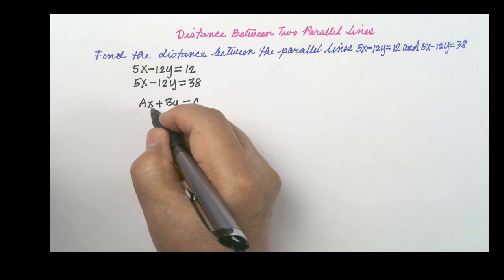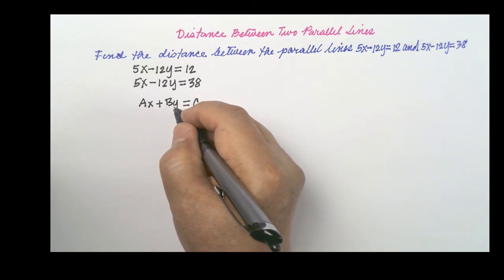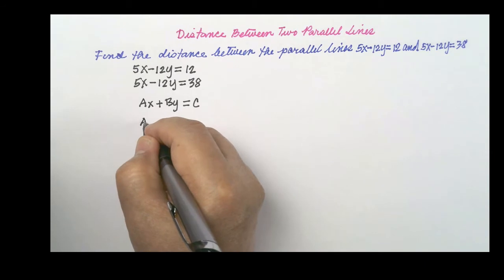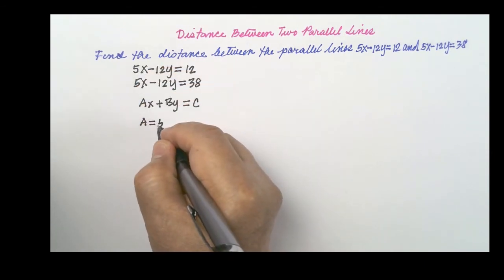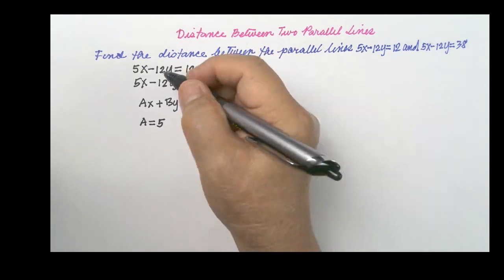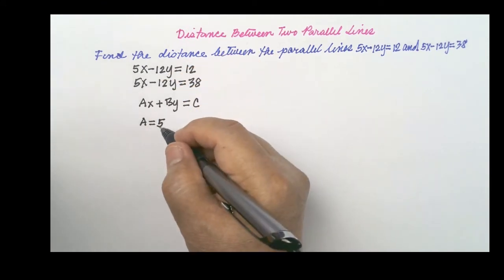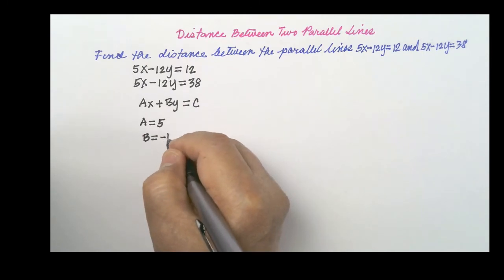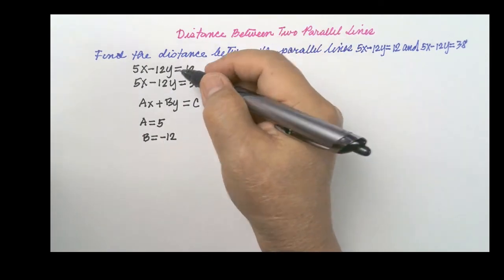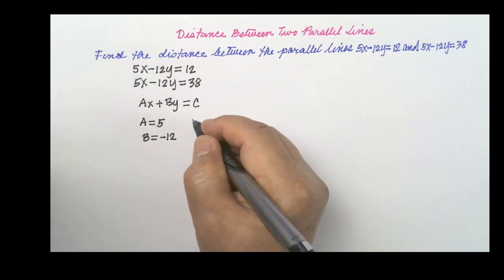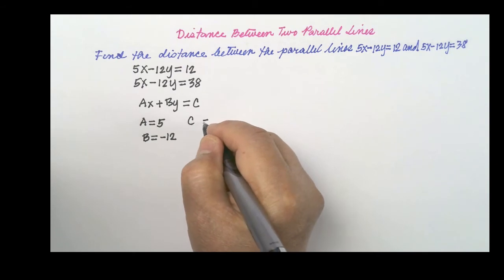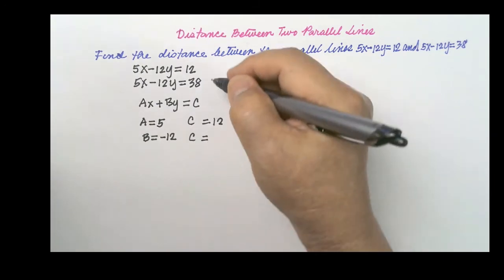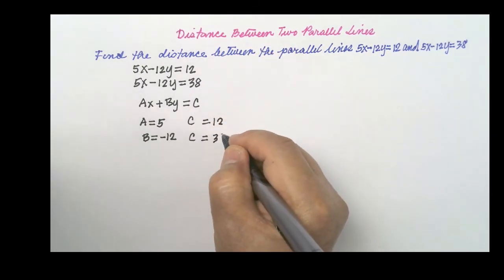A represents the coefficient of x, and B represents the coefficient of y; c is the constant term. A in the first equation is 5. A in the second equation is also 5. B in the first equation is negative 12. B in the second equation is also negative 12. C in the first equation is 12. C in the second equation is 38.